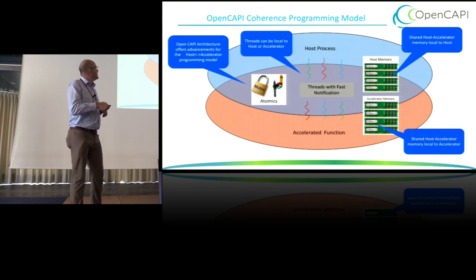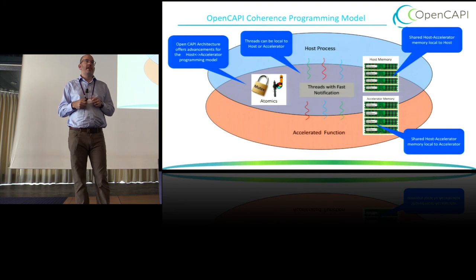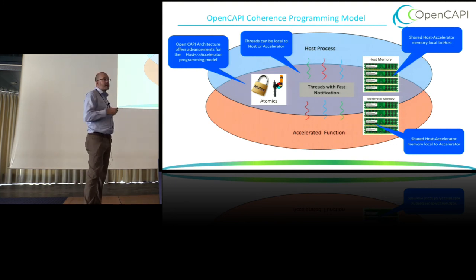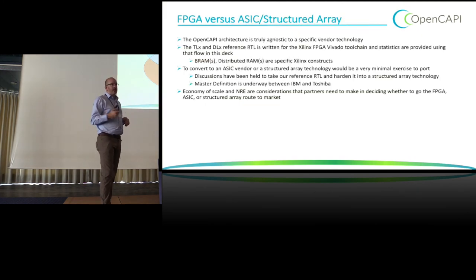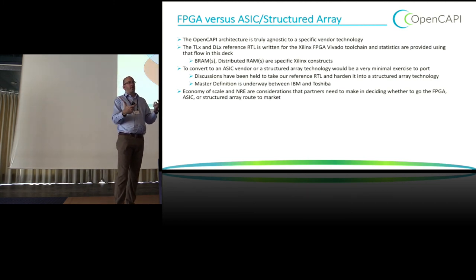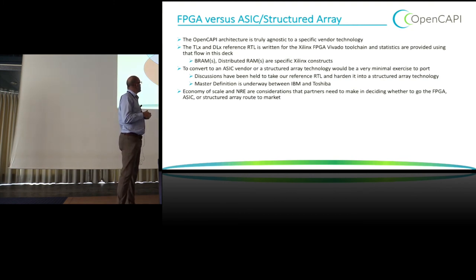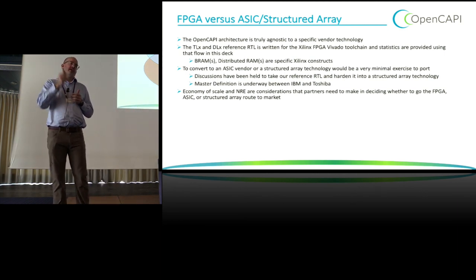For the programming model, you can have host memory and accelerator memory, all mapped into the same address space — the same virtual address space. We've got atomics, so if an accelerator wants to do processing in memory on host memory, we can send atomic operations in both directions. There are also ways to communicate quickly between threads built into the protocol. You get a rich set of commands: virtual addresses across the whole memory space, DMA reads and writes, cacheable reads and writes, and atomics. All of these are optional — if you don't want to support atomics as a device, you tell the host and it will send atomics as its own special read and write operations.